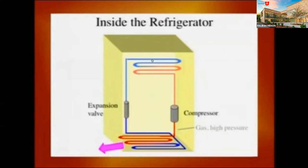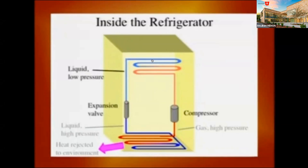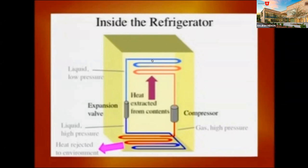Now we have the working fluid in liquid form, still at high pressure. It moves through the expansion valve — basically a tiny orifice — and as it goes through, it expands and cools, becoming a low-pressure liquid. That low-pressure liquid is circulated through coils insulated from the outside but in contact with the inside of the refrigerator. Heat flows into these cool coils, evaporating the liquid, and the energy is extracted from the materials inside. The working fluid, now a gas, goes back to the compressor and the cycle starts over.